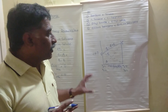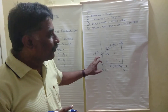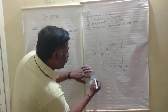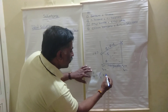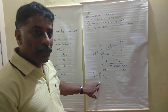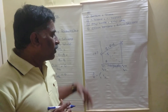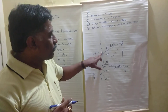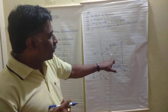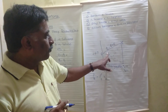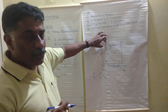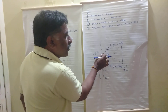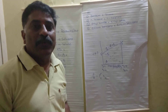According to Raoult's law, P of A equals P-not-A times X-A, where P-not-A is the proportionality constant and X-A is the mole fraction. When X-A equals 1, P of A equals P-not-A. Similarly, P of B is given by P-not-B times X-B. The total pressure of the mixture is P of A plus P of B. This is the graphical representation for ideal solutions.